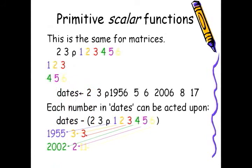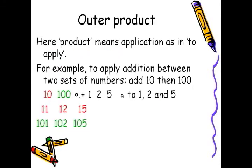If I have two rows and three columns of numbers, then each number in each row and each column will be acted upon. As you can see in the second example, I have dates, which is a table of two by three, to which I subtract six numbers — again, a table of two rows and three columns. Each number is subtracted from the corresponding number in the other matrix.